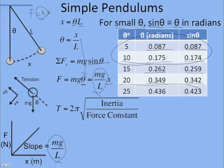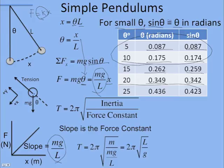And if we want the period of a pendulum, if we use the generic equation for period, 2π square root of the inertia over the force constant, well, it's accelerating tangentially, so the inertia is the mass, and the slope is the force constant. And so if I replace inertia with mass, and I replace force constant with mg over L, the m's cancel, the L moves back up to the numerator, and I get the equation for a simple pendulum.